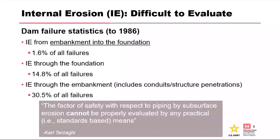There's a quote from one of the founding fathers of geotechnical engineering, Terzaghi, talking about the factor of safety — he called it piping. By subsurface erosion, we have a really hard time evaluating that by practical means. Factor of safety and standard-based methods are limited. A risk-informed framework helps us characterize the probability for the various phases of internal erosion to occur and applies available standard-based tools.